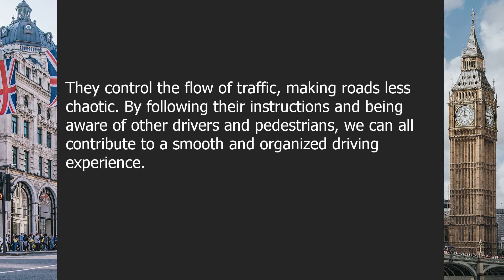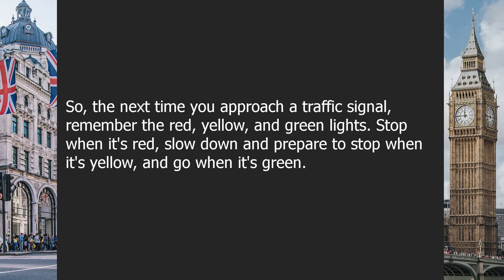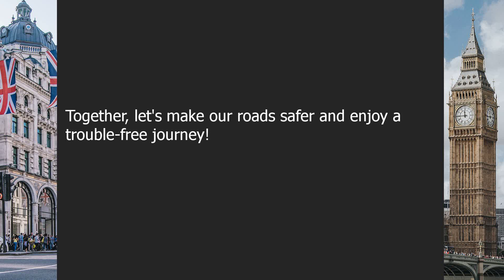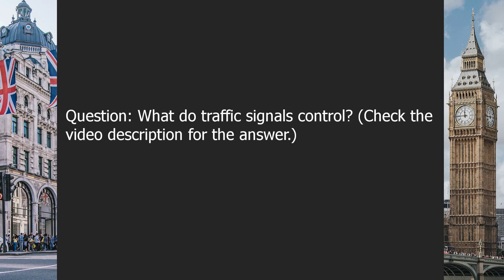Traffic signals work together to control traffic at intersections. Some intersections have traffic signals with arrows to guide turning vehicles. For example, when you see a green arrow pointing left, it means you can turn left safely without worrying about oncoming traffic. Pay attention to these arrows as they help keep traffic flowing smoothly.